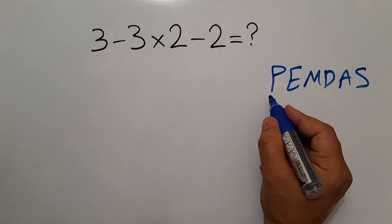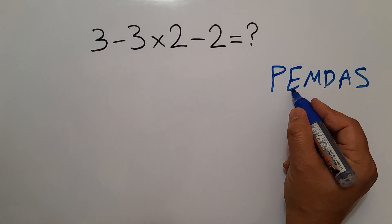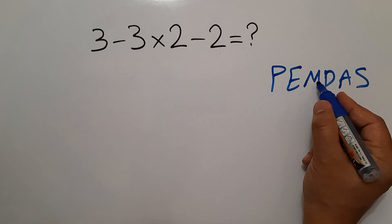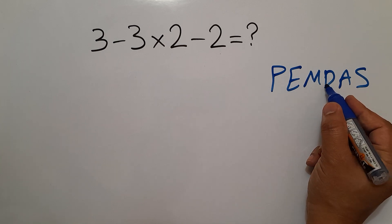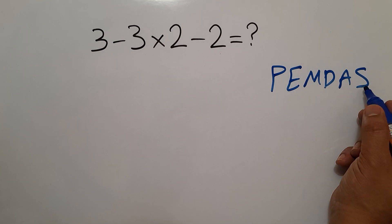PEMDAS. P stands for parentheses, E stands for exponents, M and D stands for multiplication and division, A and S stands for addition and subtraction.